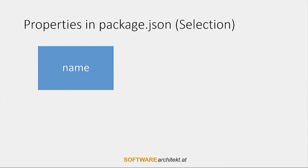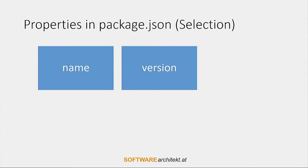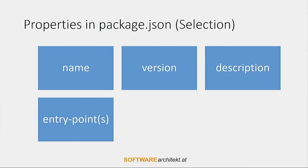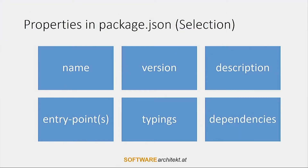For instance, there is a name — this is the name you have to type in when you want to npm install the library, and also the name you reference when importing it into your Angular application. There is a version, which needs to be increased before you can publish a new version; the consumer checks whether the version has increased and only then downloads it again. There is a description, entry points — files that are loaded when you reference your library — typings for TypeScript, and a dependency section with all the other libraries you need.